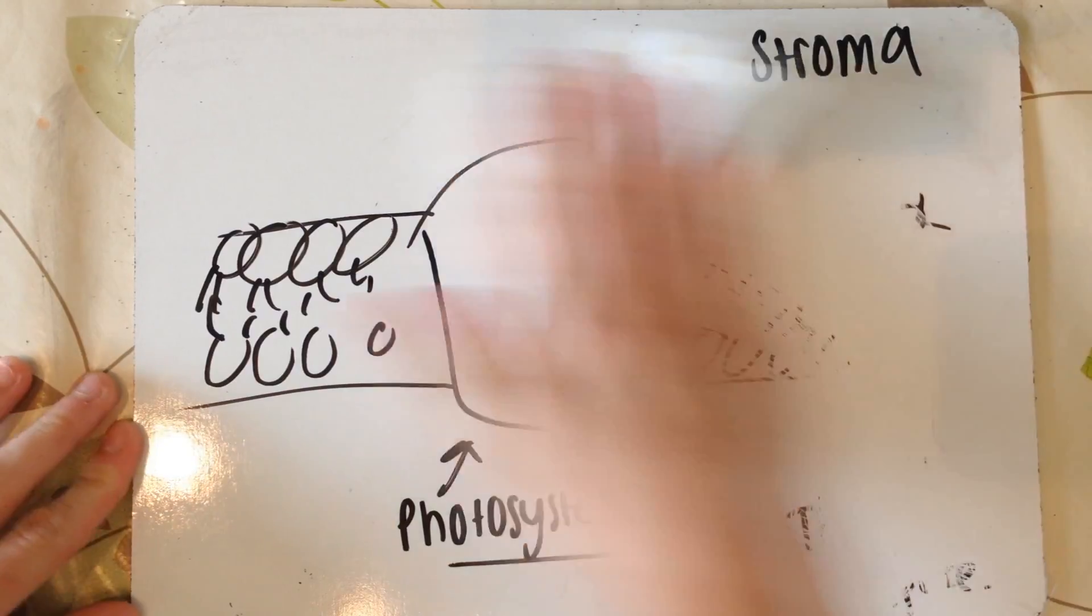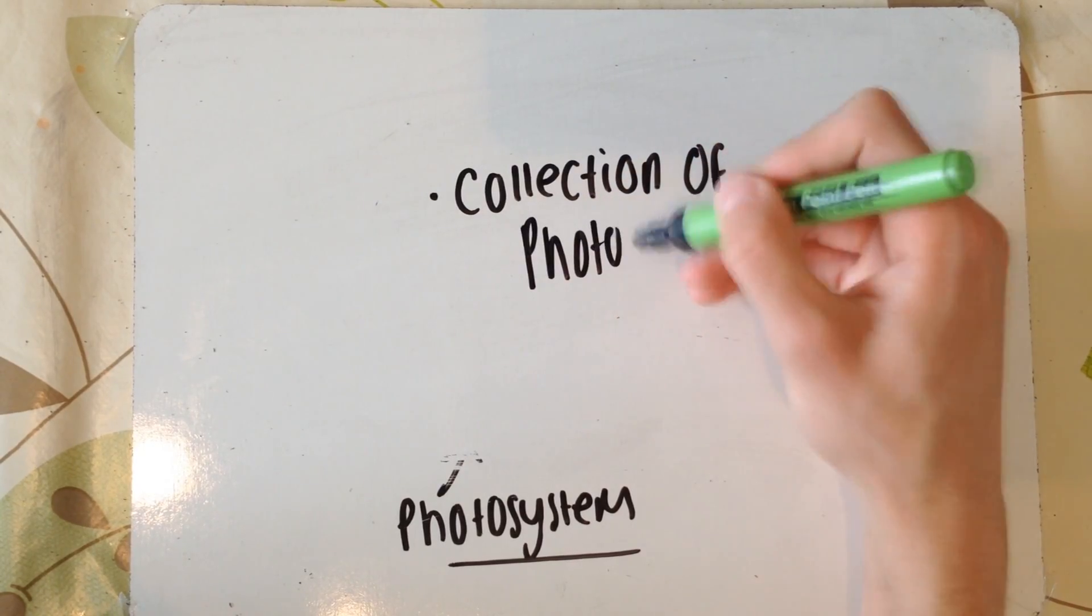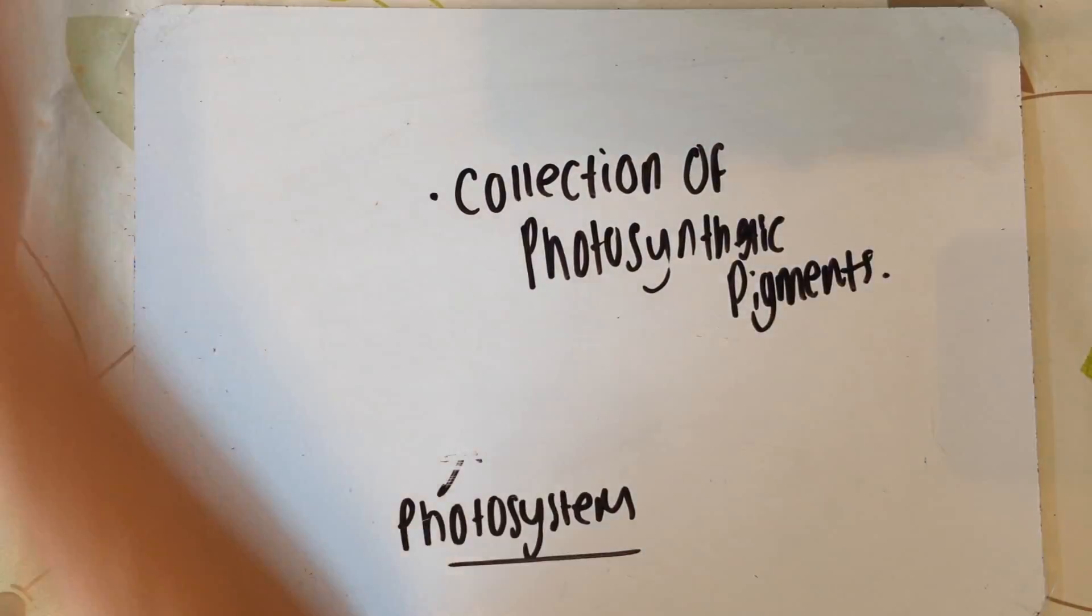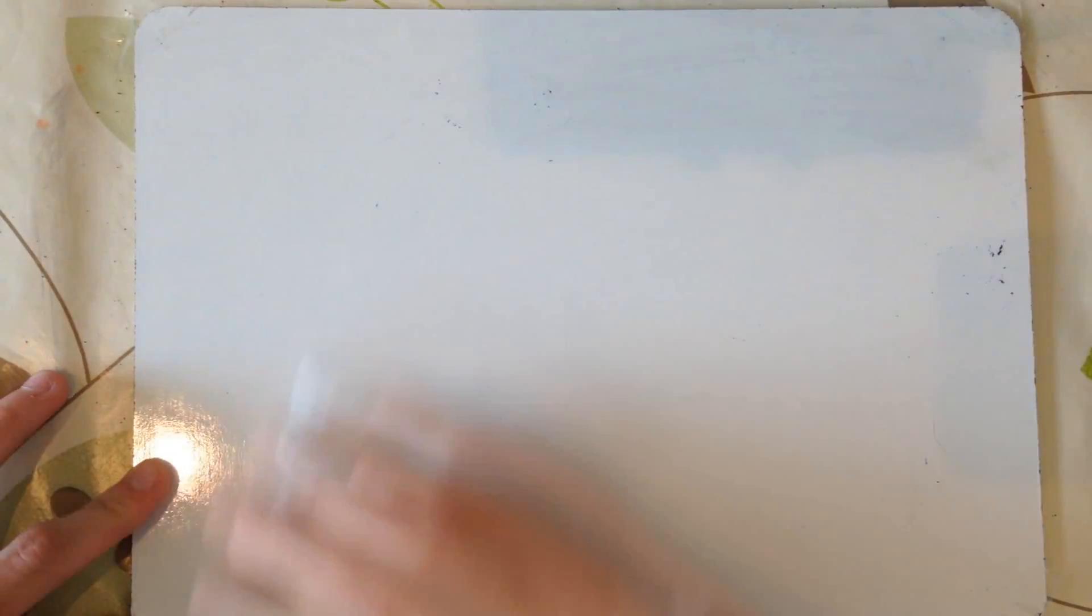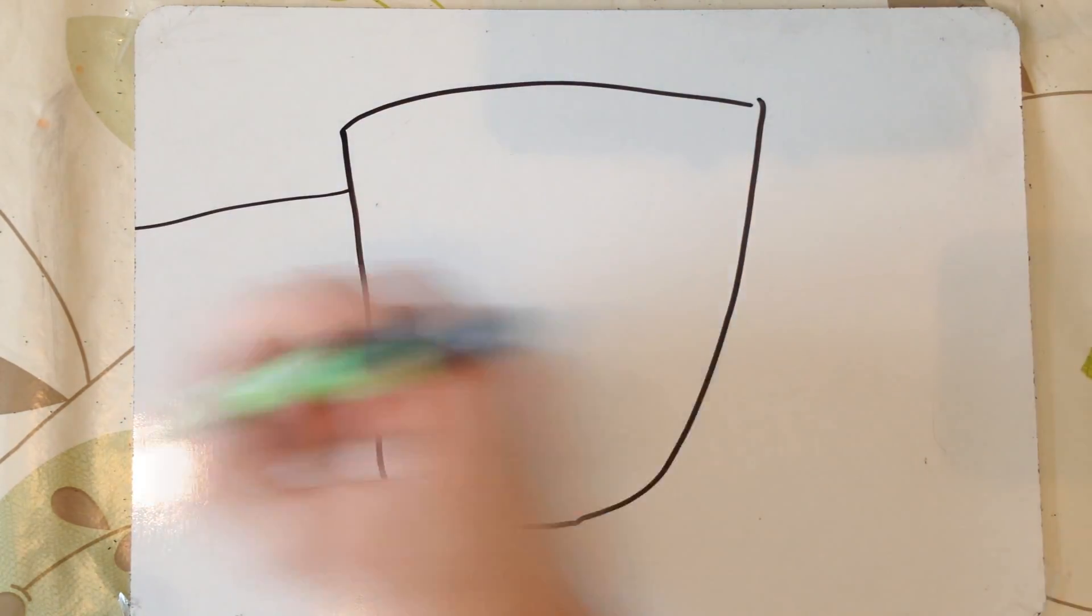I'm just now going to zoom in on that to make it nice and clear for you guys. The photosystem is essentially a collection of photosynthetic pigments, and photosynthetic pigments are molecules that essentially absorb light energy. Each pigment is different and they all have their own ranges of wavelengths of light they can absorb.